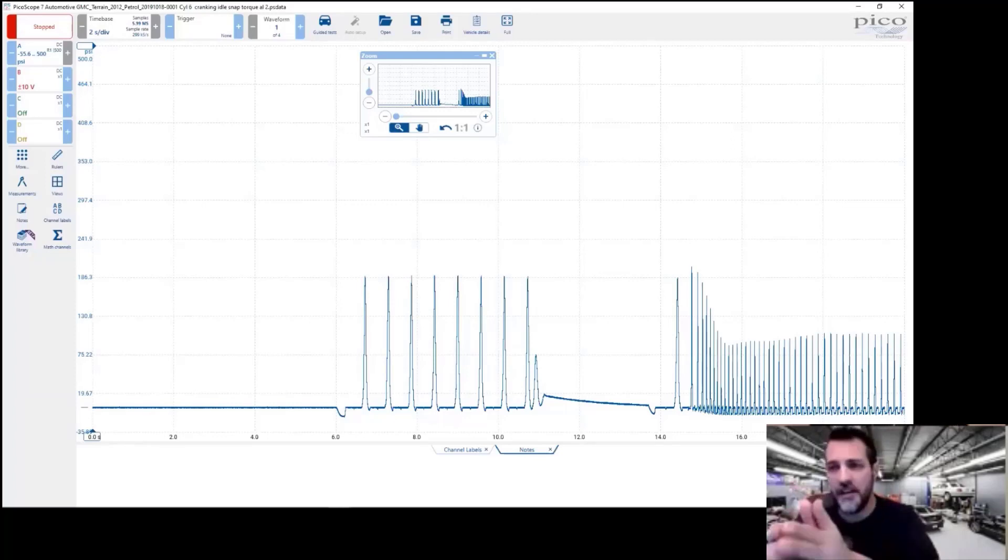What we have here, at two seconds per division, we've got a total of 20 seconds on the screen. And here's why this is important. And this is where you guys want to take notes of this. Anytime I am capturing pressure, especially in-cylinder, I want to see pressure when the engine is cranking, as I do here. I want to see pressure when the engine starts and is at idle.